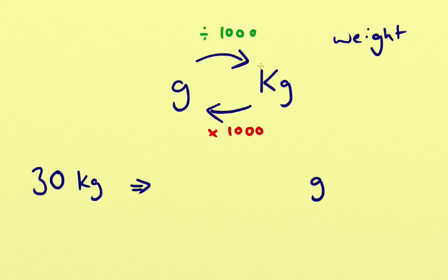Right, we've got kilograms and we want to get to grams, so we're going to follow that arrow just there which is to times it by a thousand. So we're going to take our 30 and we're going to times it by a thousand and that's going to give us 30,000. And that there is our answer. Simple as that. 30 kilograms is 30,000 grams.